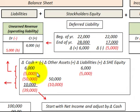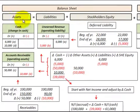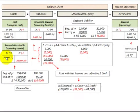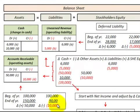Now looking at the asset side of the equation, that's where we have our accounts receivable. We would recognize any revenue ahead of any cash received. So in the case where we had an increase of $50,000 during the year in accounts receivable, we'd increase that by $50,000, and then recognize that as a non-cash revenue. Now in the case where we had a reduction of $10,000 in accounts receivable, we'd reduce that accounts receivable by that amount, and then increase our cash by that $10,000 — so we'd receive the cash.